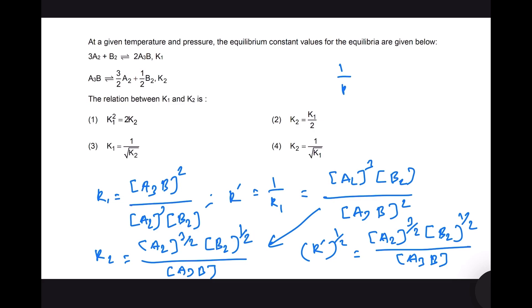So 1 by k1 to the power 1/2 equals k2, and therefore 1 by square root of k1 equals k2. And that we have here, and therefore answer 4 is correct.